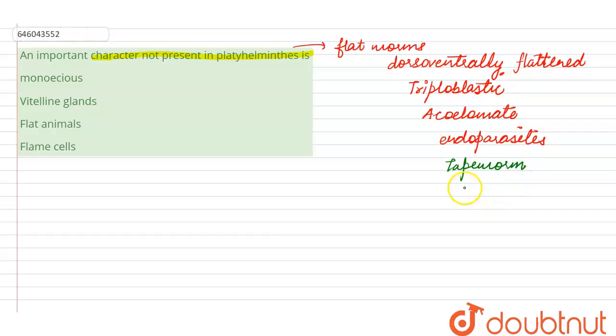Here we see the options which are given. The first one is it is monoecious, that means it is bisexual. Bisexual means having both the male and the female sex organ in one organism itself, that means they are hermaphrodites. This exists as a parasitic adaptation for the Platyhelminthes, so that even if one worm enters into the body it can reproduce to form many number of worms.